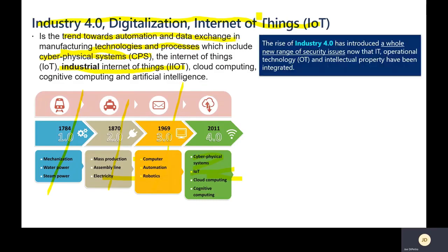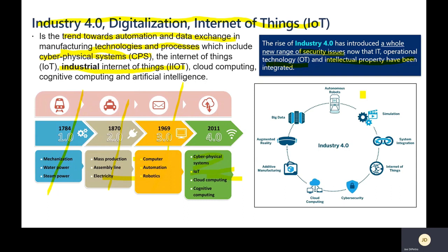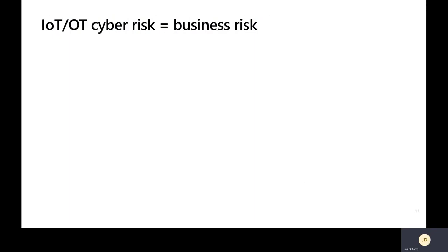With all of this connectivity and the rise of Industry 4.0, it has introduced a whole new range of security issues that IT now has to deal with from an OT perspective, where intellectual property may be integrated with the OT environment. With Industry 4.0, many are doing digital twins or simulations. IoT enables sensors connected globally for predictive maintenance and smart metering. Cloud computing provides tremendous operational efficiencies, automation with robotics is driving manufacturing efficiencies, and augmented reality and big data enable preventive maintenance. Autonomous robots are also starting to appear on the scene.